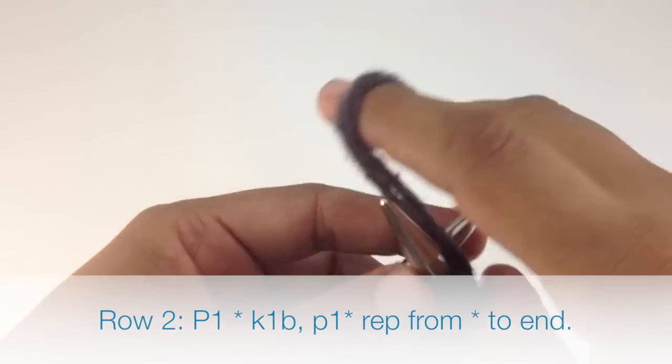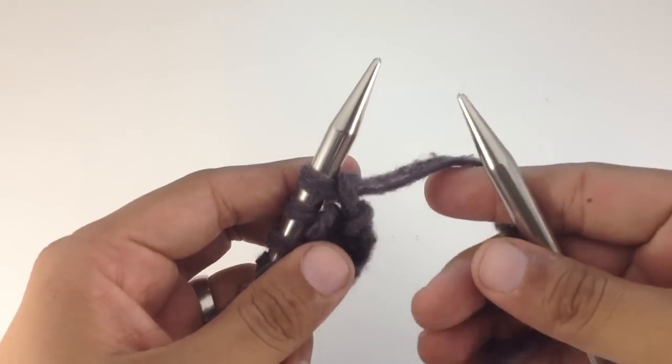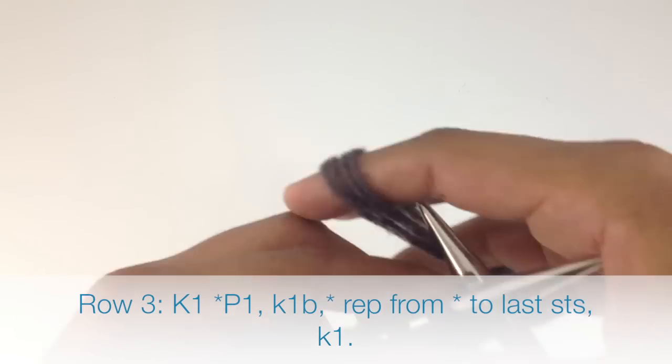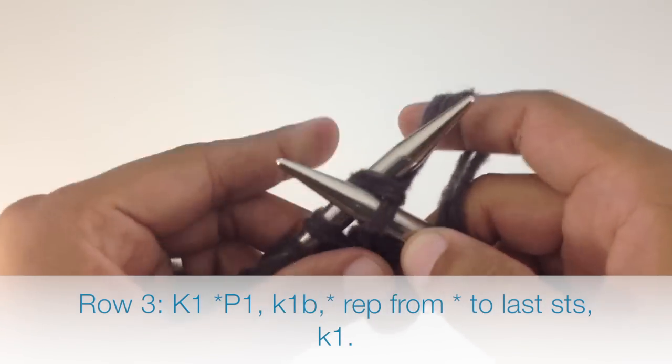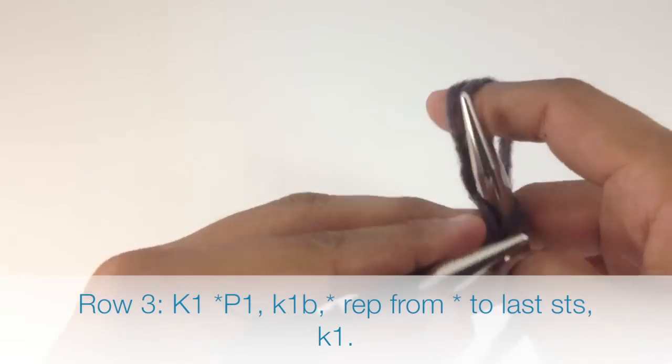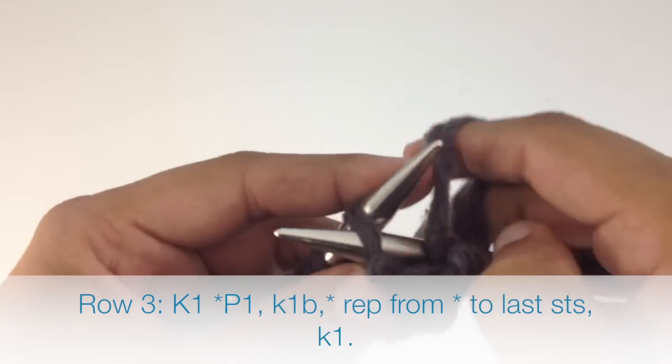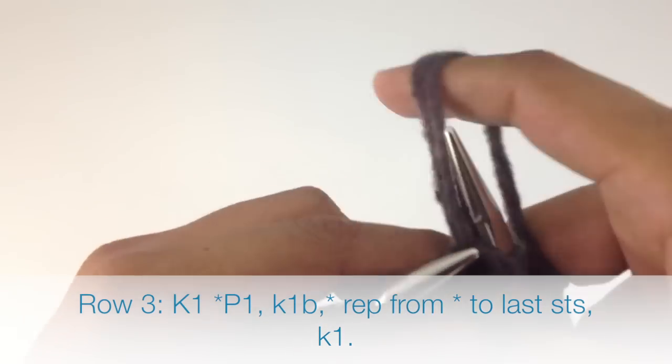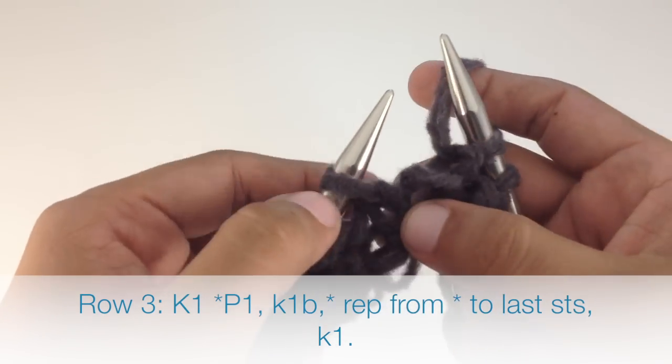Row three: Begin by knitting one, then start the repeat by purling one and finish the repeat by knitting one below. Again, go into the stitch that is right below the stitch on your needle.